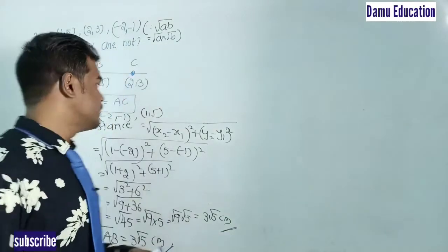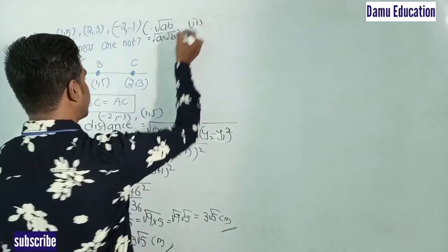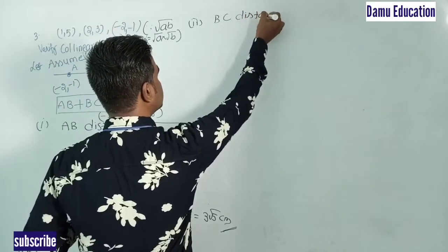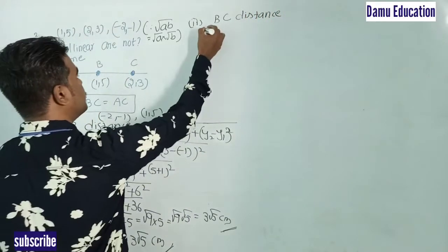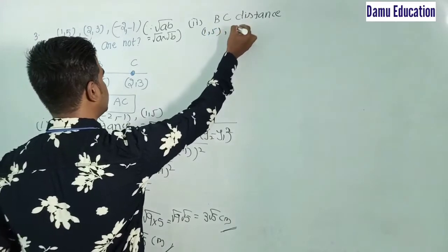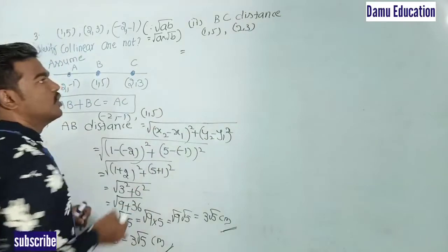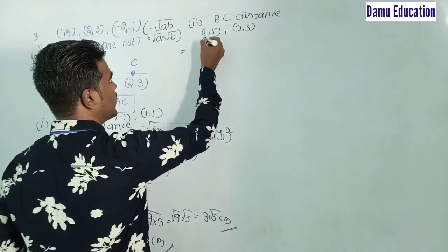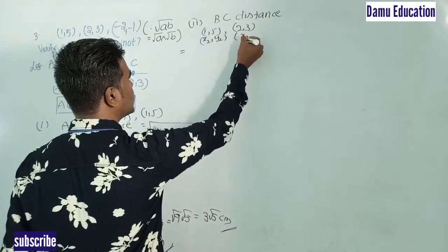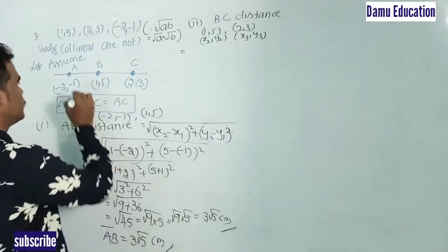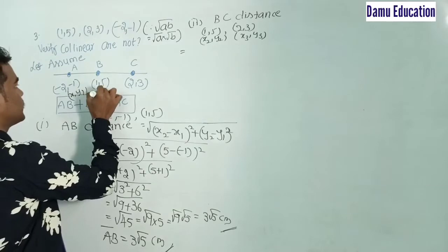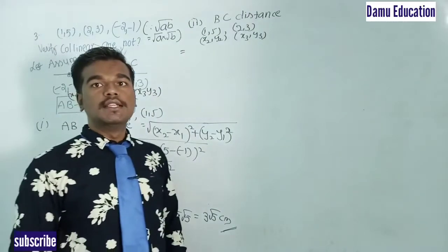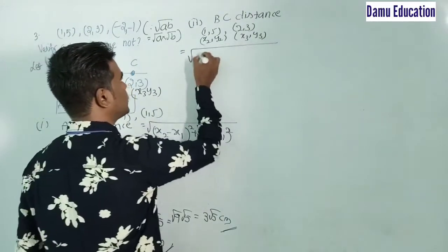Now let's calculate the second distance, BC. The points are B = (1, 5) and C = (2, 3). We label these as (x2, y2) and (x3, y3) to avoid confusion. The formula becomes: BC = √[(x3 − x2)² + (y3 − y2)²].